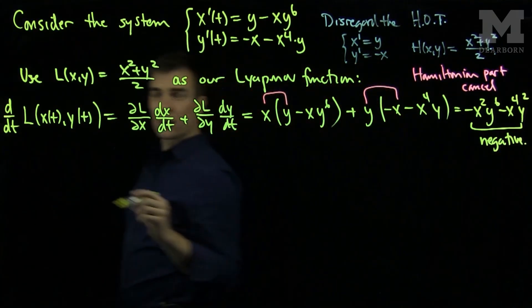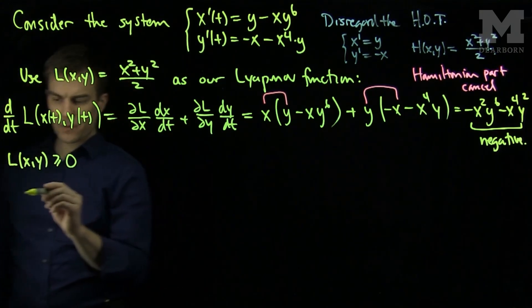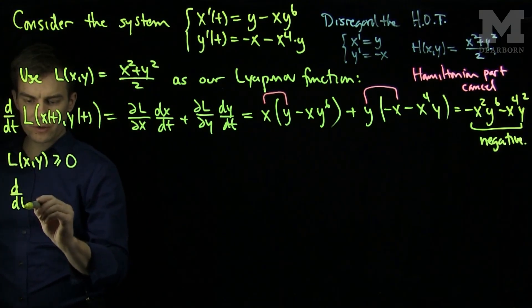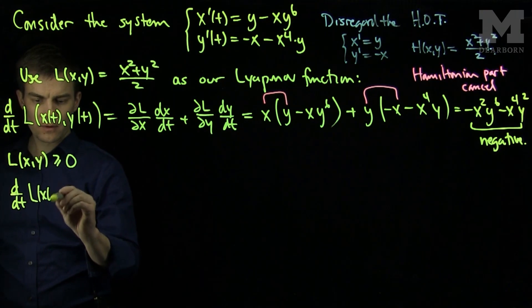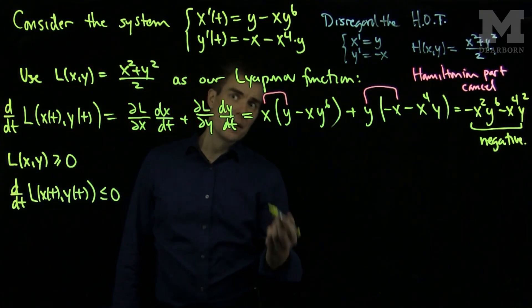So now, I have a function L of xy, which is greater than or equal to zero, and the derivative along the trajectories of this function is less than or equal to zero.